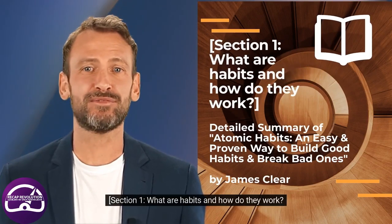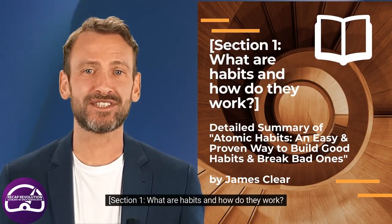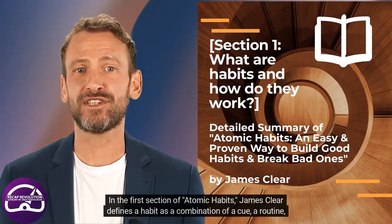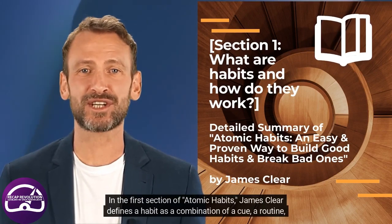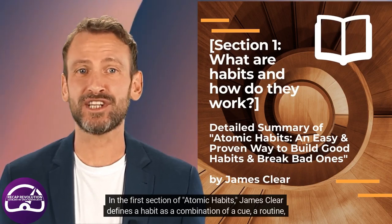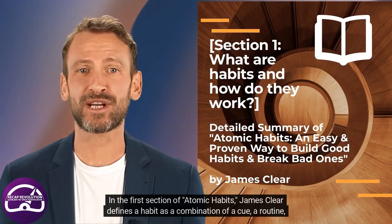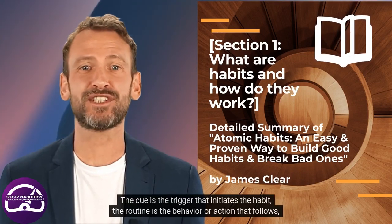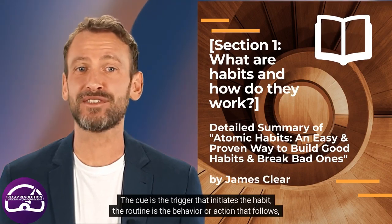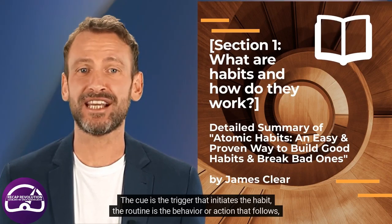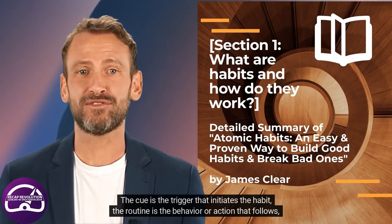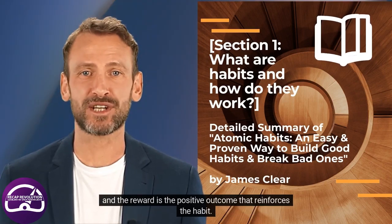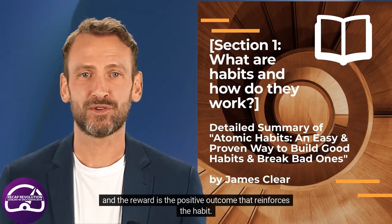In the first section of Atomic Habits, James Clear defines a habit as a combination of a cue, a routine, and a reward. The cue is the trigger that initiates the habit, the routine is the behavior or action that follows, and the reward is the positive outcome that reinforces the habit.